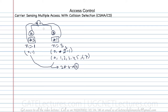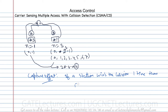If A has already started sending data, most of the time the probability of A winning the successful collision keeps increasing exponentially. This is called the capture effect. If a station wins the collision one time, then its probability of winning the successive collision increases exponentially. This is the backoff algorithm in CSMA/CD.